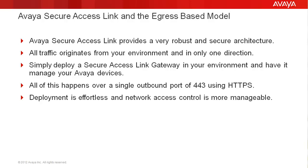By deploying a Secure Access Link gateway at your premises, you can manage remote access and alarm traffic for all of your devices using this model. What's more, all of this happens using a single outbound port of 443 over the HTTPS protocol, which makes deployment of SAL effortless and network access control much more manageable.